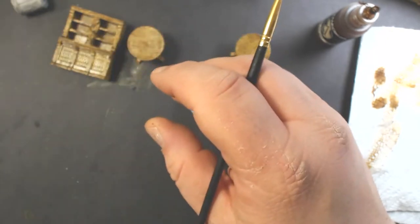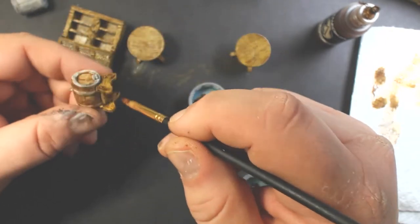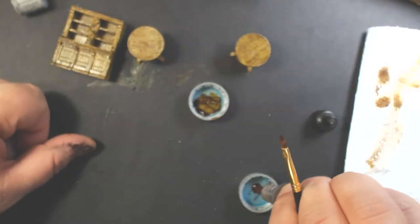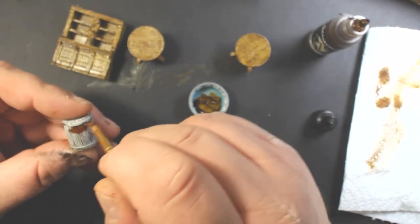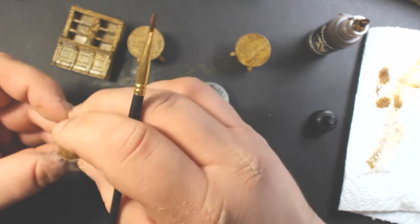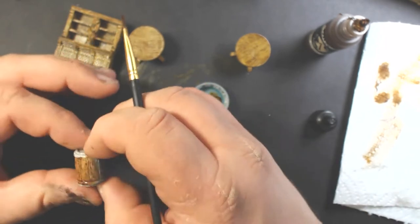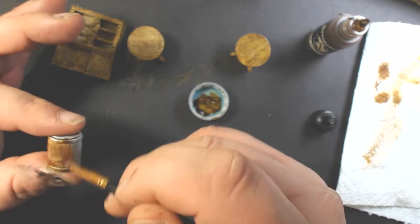Here I've painted everything. Everything was done but the barrels, and for the barrels I want to use the Scale 75 Inktense Chestnut just to give them a little bit of a different color.